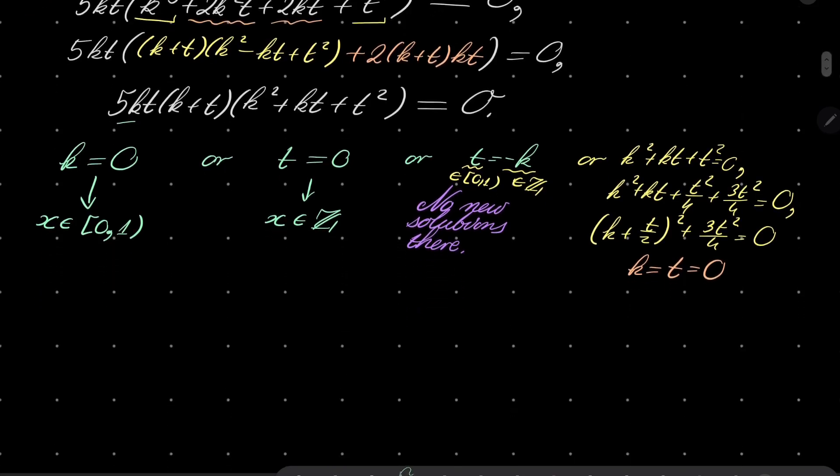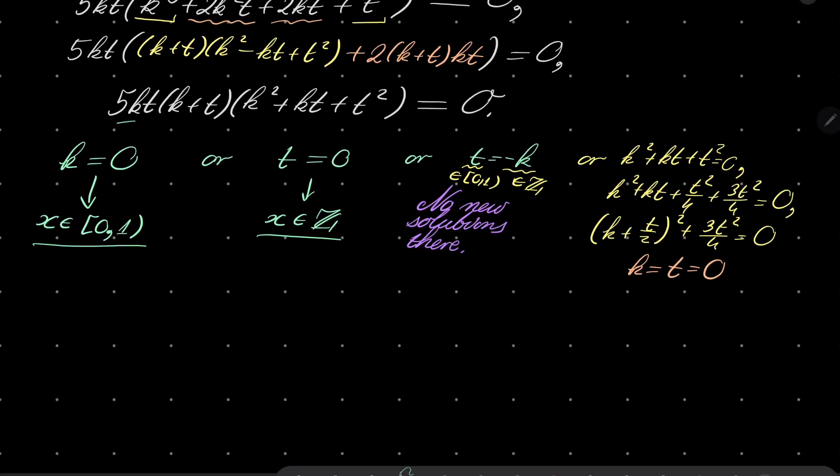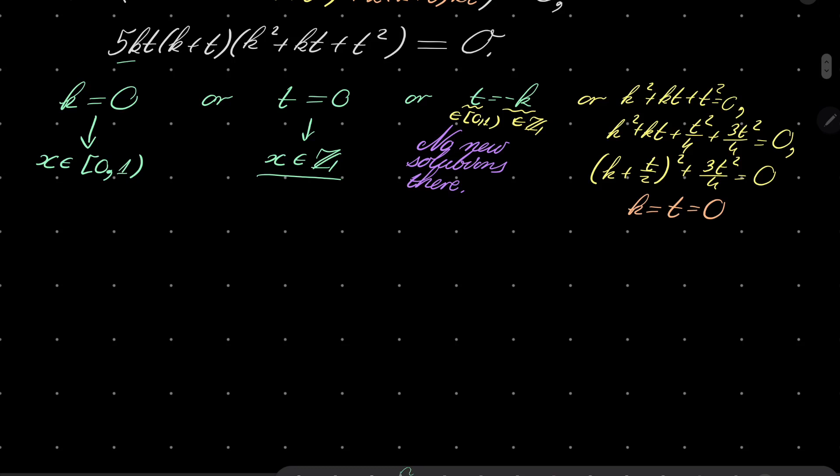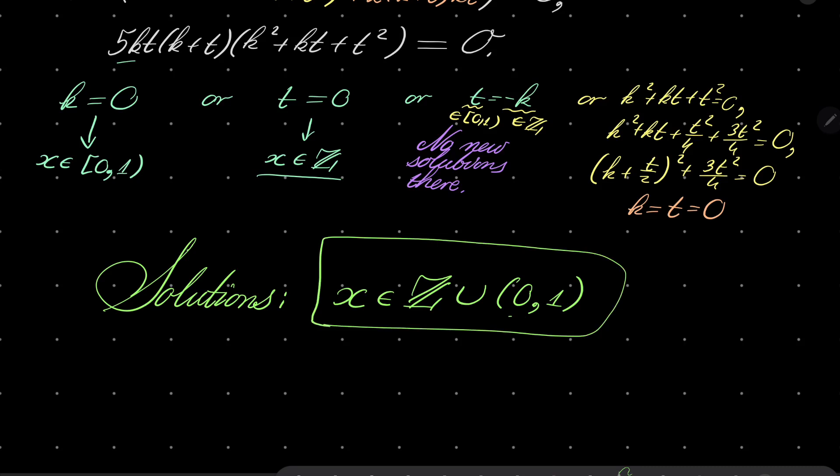So our formula of solutions consists of integers and this interval. So our solutions are integers and the interval 0, 1. I can write it as being open on both sides because 0 is an integer, so nothing is lost. And that closes our problem. So yes, pretty nice problem. Thank you very much for watching. I hope that you've learned something new this time and I will see you next time. Goodbye.